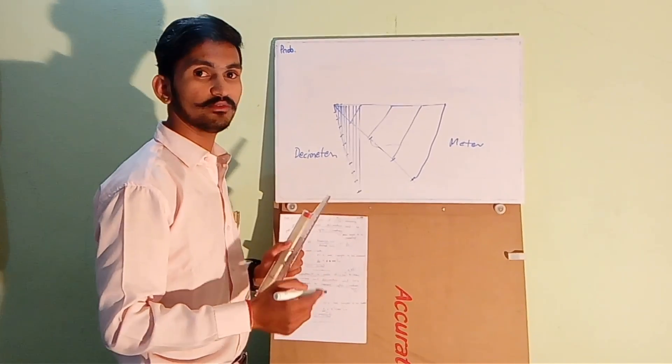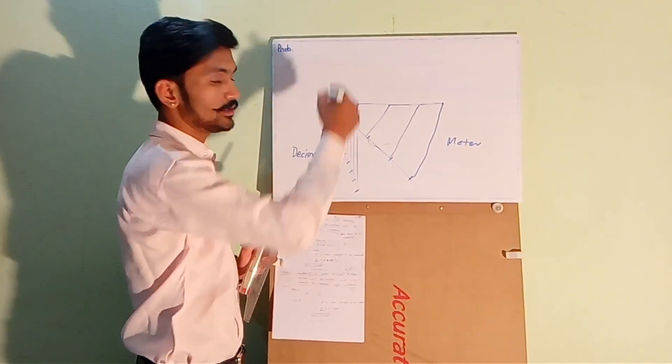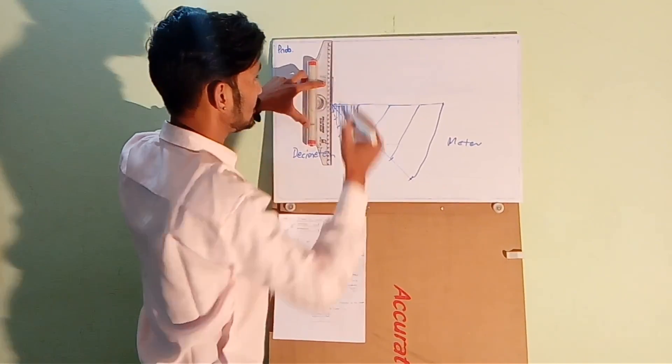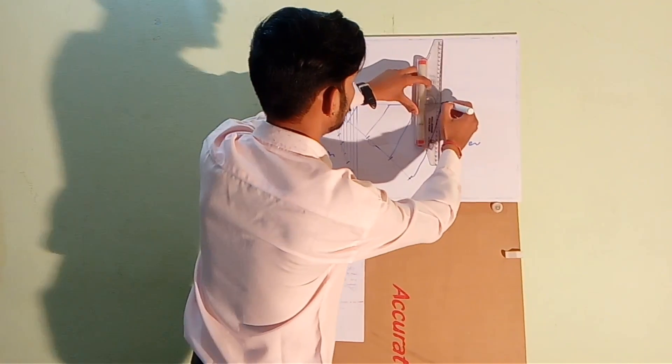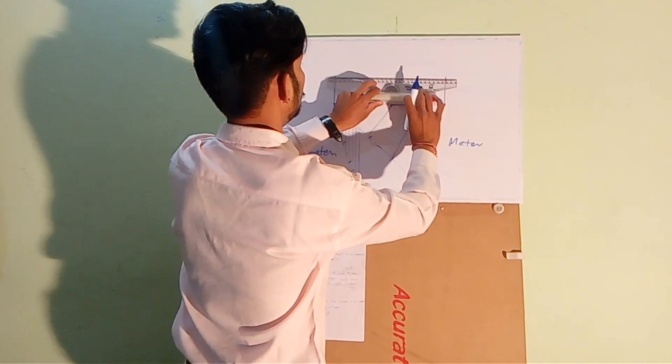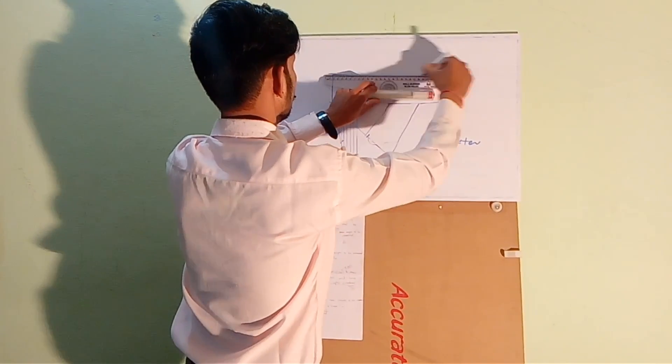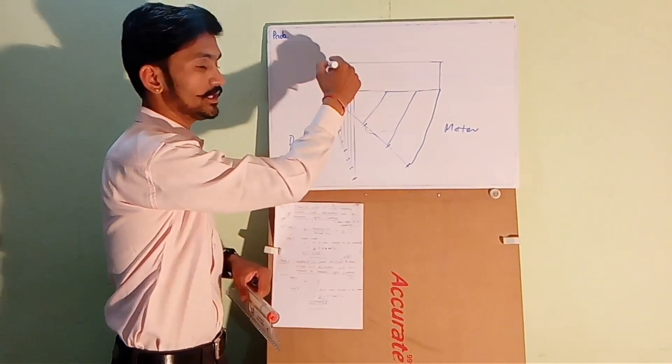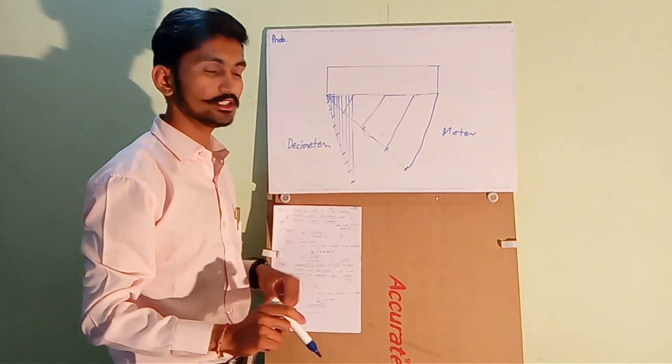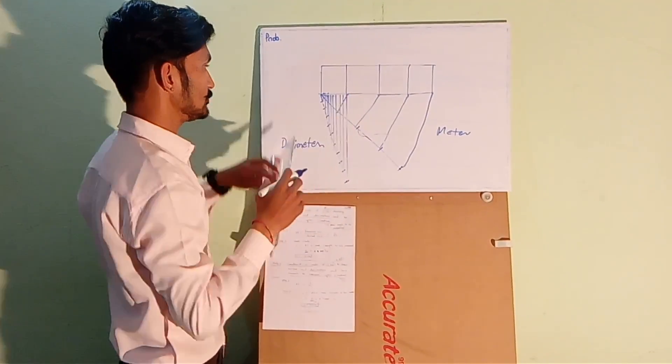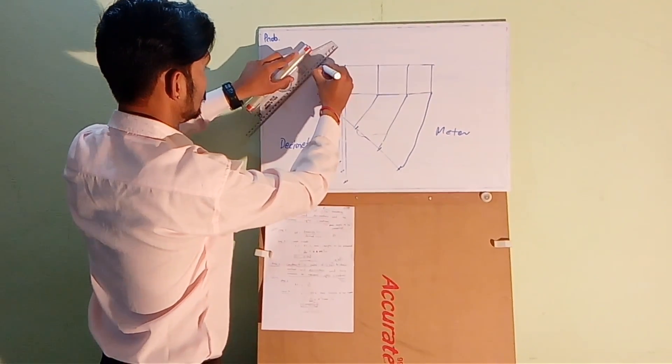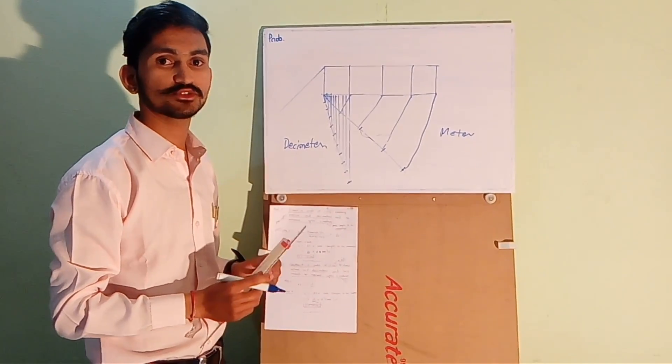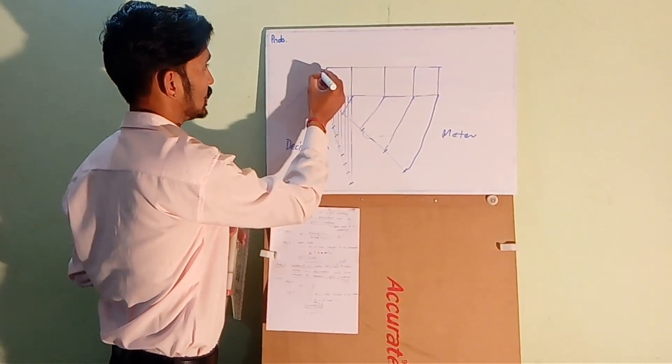To draw diagonal scale, first we will draw a line from this point, a vertical line of 5 centimeter. Here also. And join them. Now we generally take the length of this line as 5 centimeter. Now divide this line. To divide this line, draw another line. We know 1 decimeter is equals to 10 centimeter. Divide this line into 10 equal parts.